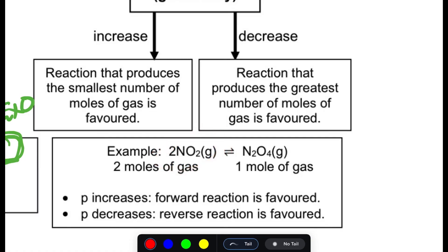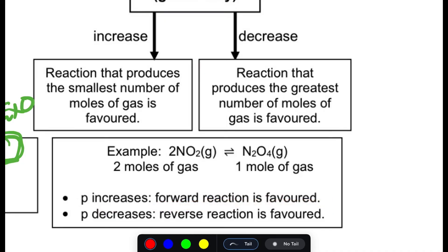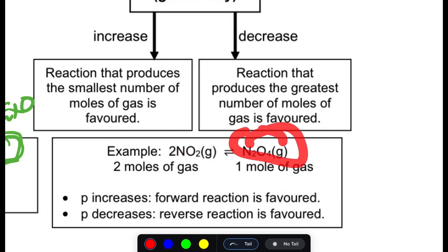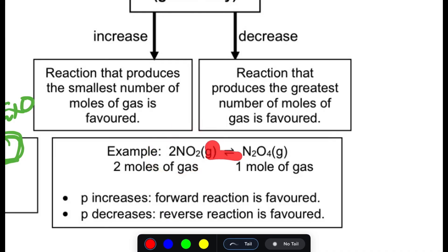For example, in the reaction with NO₂ and N₂O₄: there are two moles on the reactant side and one mole on the product side. When pressure is increased, the forward reaction is favored because the product side has fewer moles. When pressure is decreased, the reverse reaction is favored because the reactant side has the most number of moles.